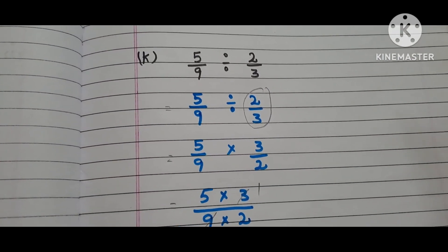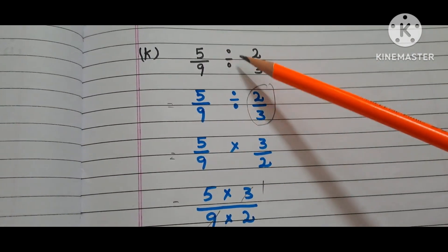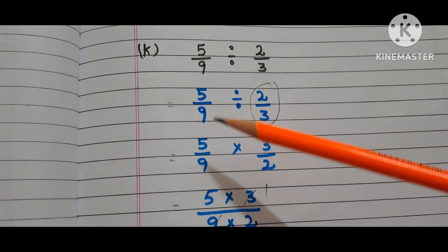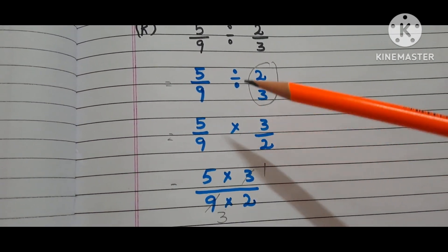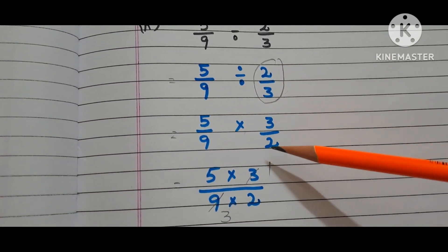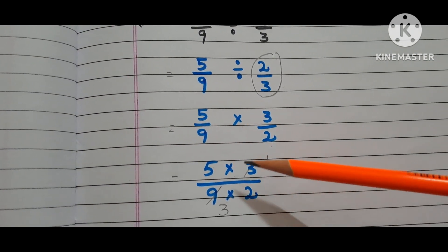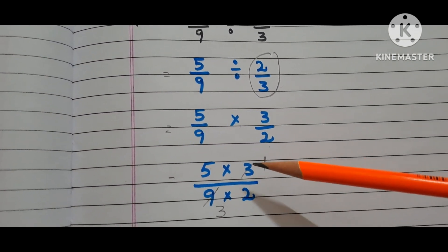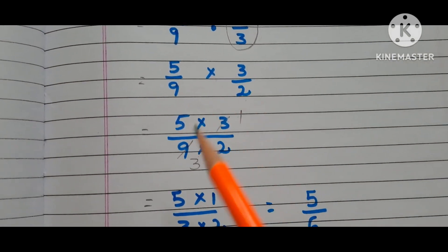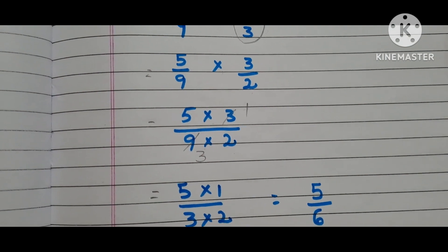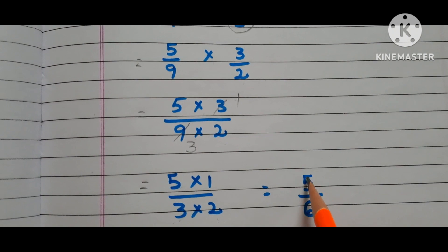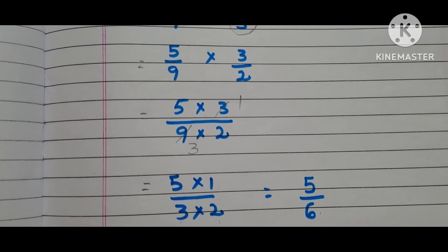Now let us go to the K bit. The question is 5/9 divided by 2/3. Copy down the first fraction 5/9. Write the multiplication symbol instead of the division symbol and take the reciprocal of 2/3, that is 3/2. We have 5 times 3 by 9 times 2. Here we can reduce 3 and 9: 3 ones are 3, 3 threes are 9. Now we have 5 times 1 by 3 times 2 — 5/6. The answer is 5/6.